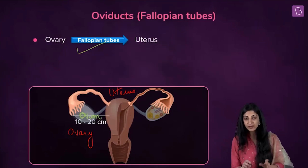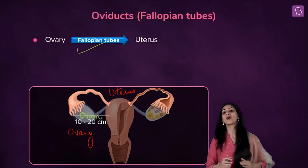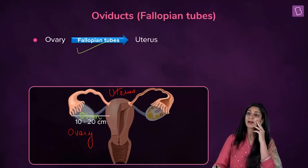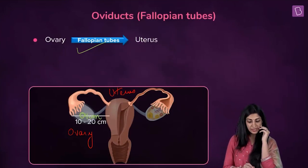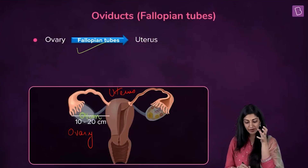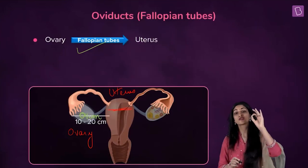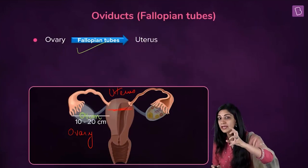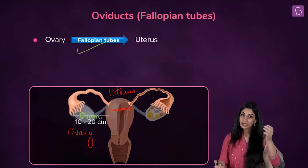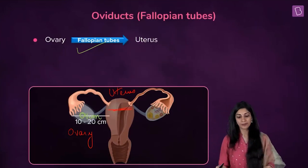Before that, a lot has to happen — the coming together of male and female gametes. The ovum is produced in the ovary, it has to travel, the zygote has to form, and finally it will reach the womb. So where do all those intermediate steps happen? Let's find out.